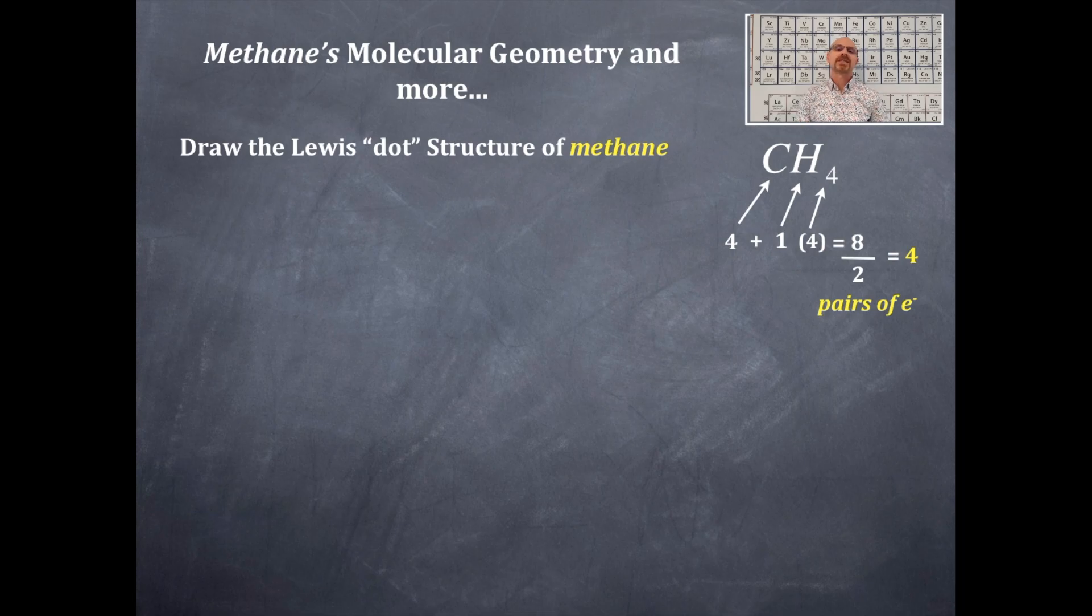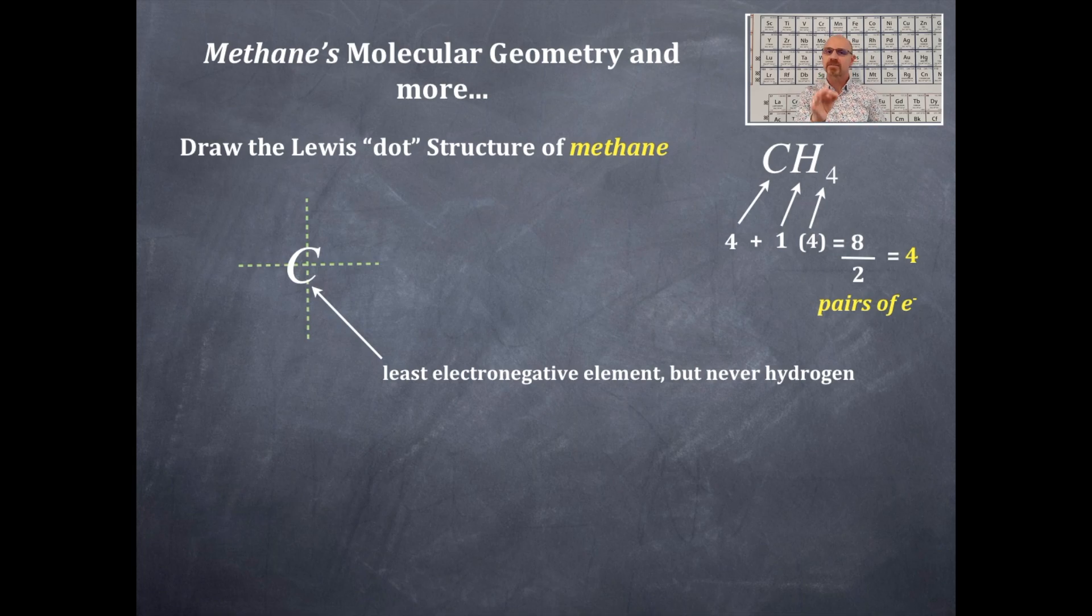Now we need to determine the least electronegative element. The least electronegative goes in the middle, but never hydrogen. Therefore, by default, it's carbon. Carbon goes in the middle. Notice that I draw X marks the spot with a plus sign that indicates the center where I'll put that central element.